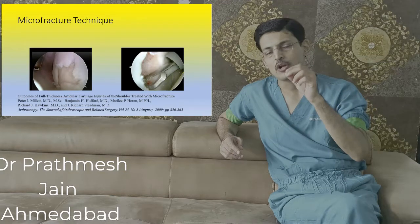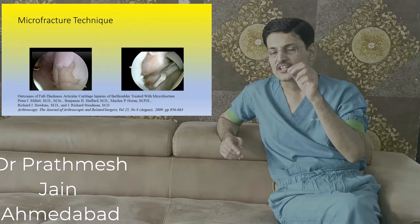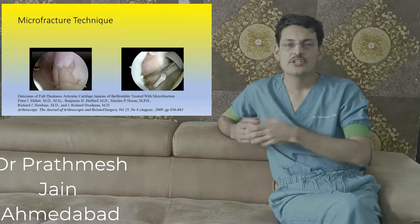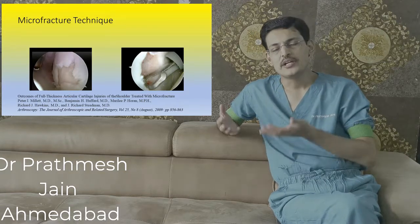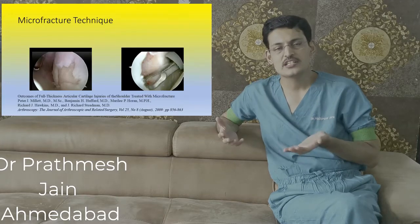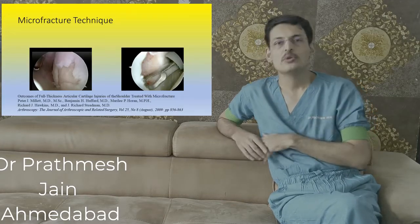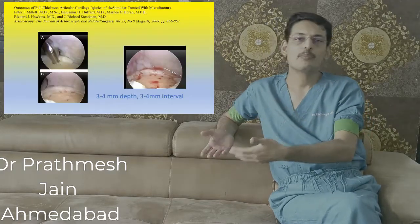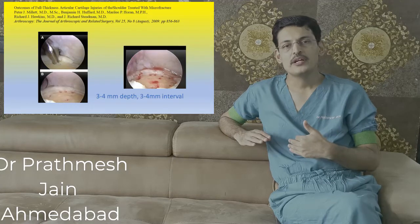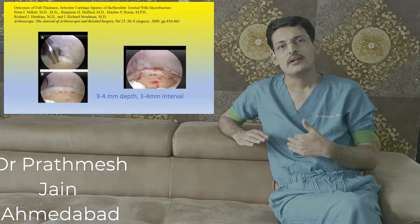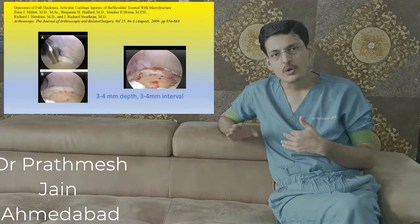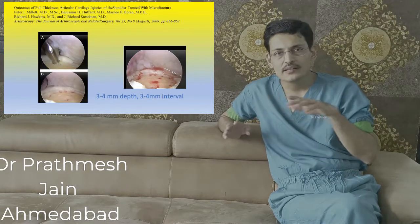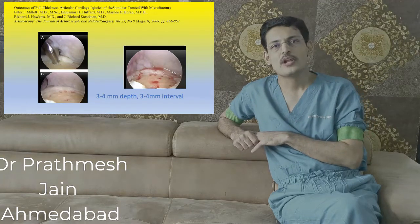We can do small microfracture pricks into the chondral lesion to actually regenerate fibrocartilage tissue into that particular area of the defect. We also try to put anchors into the labral defect itself and pull the labrum more into the labral defect, so that it actually closes or makes the labral defect as small as possible.